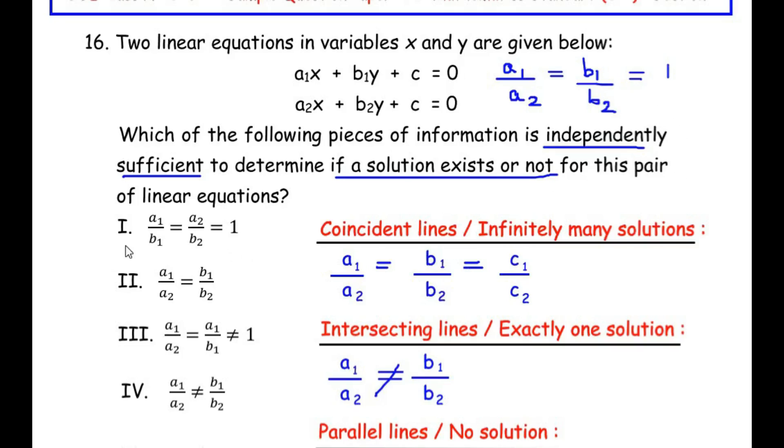And since this represents our coincident lines, we can say that the first option can be considered. If you look carefully here, they have just exchanged the places of b₁ and a₂. So if you bring a₂ here it becomes a₁/a₂ as it is there in the condition, and if we take b₁ over here it becomes b₁/b₂.